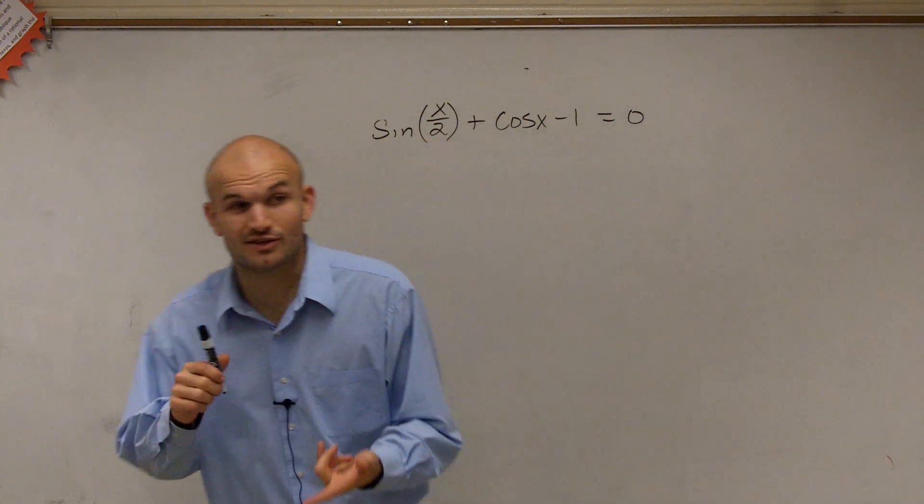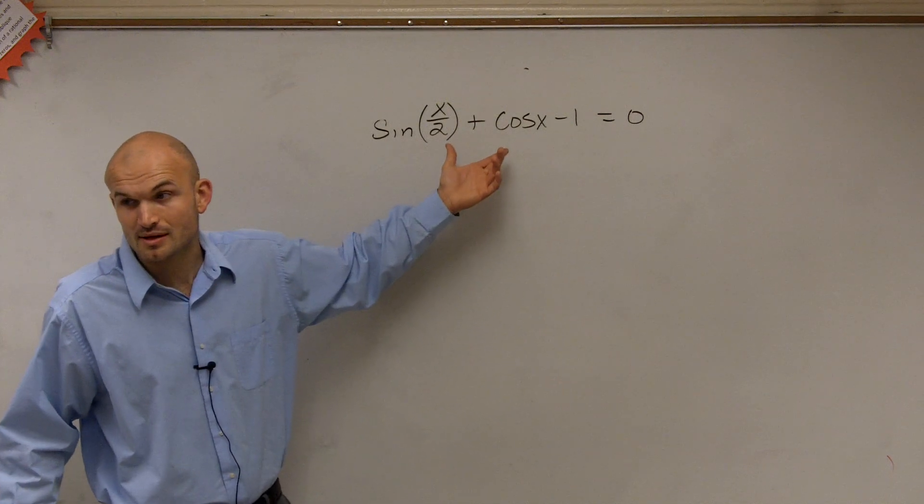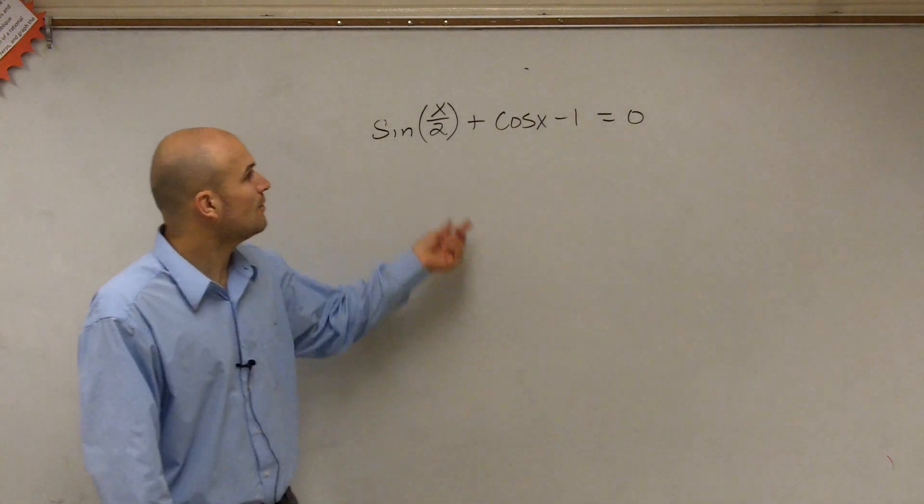So we're looking into solving. Remember, we either isolate our variable or use factoring. We have a problem because we don't have common terms, and it's going to be difficult for us to try to factor these with the terms that they're at. However, I do notice that I have a sine of x divided by 2.